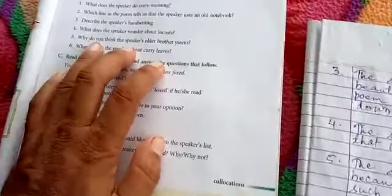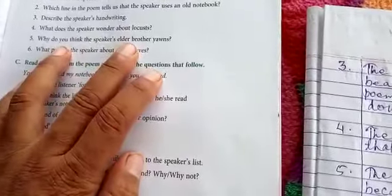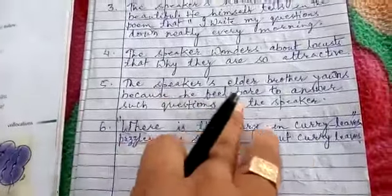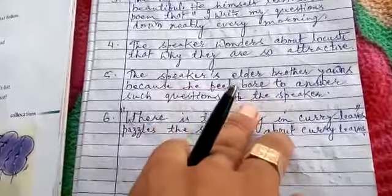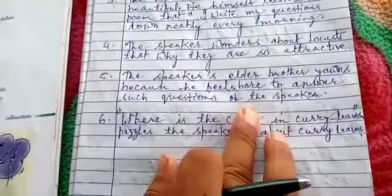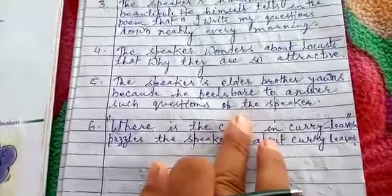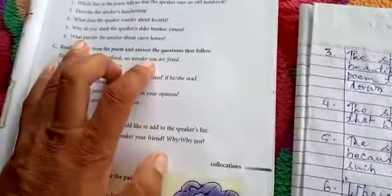Next question it is. Why do you think the speaker's elder brother yawns? Write down here. The speaker's elder brother yawns because he feels bored to answer such questions of the speaker. Whatever the speaker asks to his elder brother, such questions make him bored. That's why he feels yawning at that time.